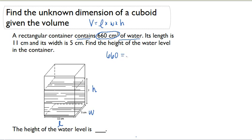So 660 equals length, which is 11, times the width, which is 5, times the height.